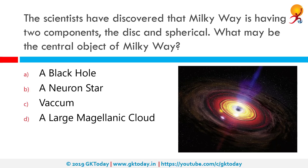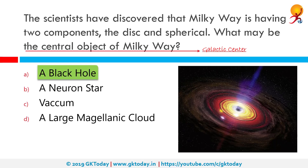Scientists have discovered that the Milky Way has two components: the disc and spherical. The central area of the Milky Way is known as the galactic center, which is the rotational center of the Milky Way. There is a supermassive black hole of 4.1 ± 0.034 million solar masses at the galactic center, which powers the Sagittarius A* radio source.